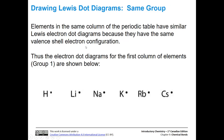Elements in the same column of the periodic table have similar Lewis electron dot diagrams because they have the same valence shell electron configuration. Looking at the first column — hydrogen, lithium, sodium, potassium, rubidium, and cesium — each has one valence electron in their valence shell. The shell is n=1, 2, 3, 4, 5, and 6 respectively, but it's still just one electron in that highest n orbital.